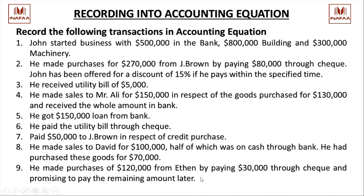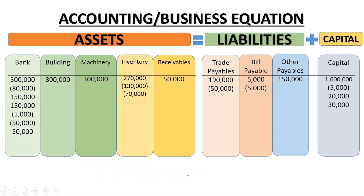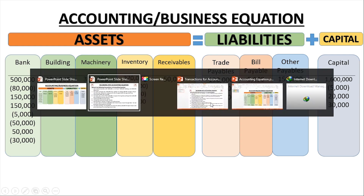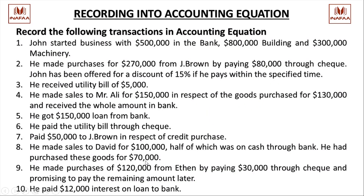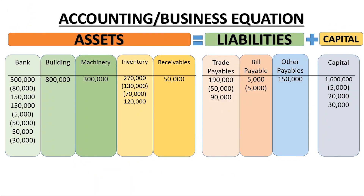Next transaction: purchases of $120,000 from Ethan, paying $30,000 by check with the balance promised later. Inventory increases by $120,000, bank decreases by $30,000, and the remaining $90,000 is recorded as trade payables. Final transaction: $12,000 interest on loan paid — bank decreases by $12,000 and capital decreases by $12,000 as it is an expense.